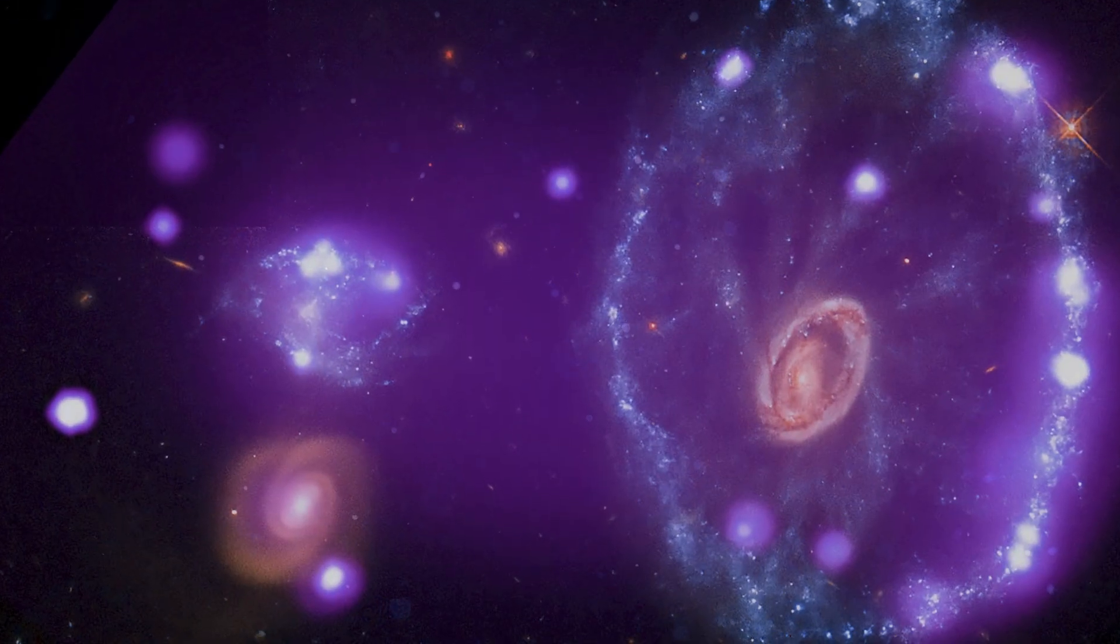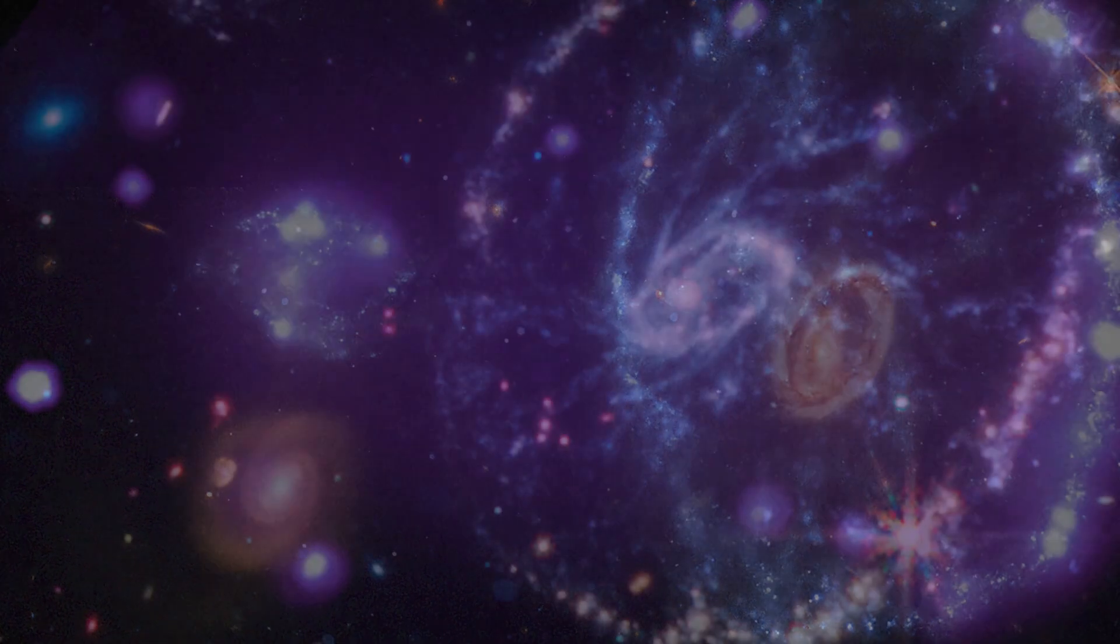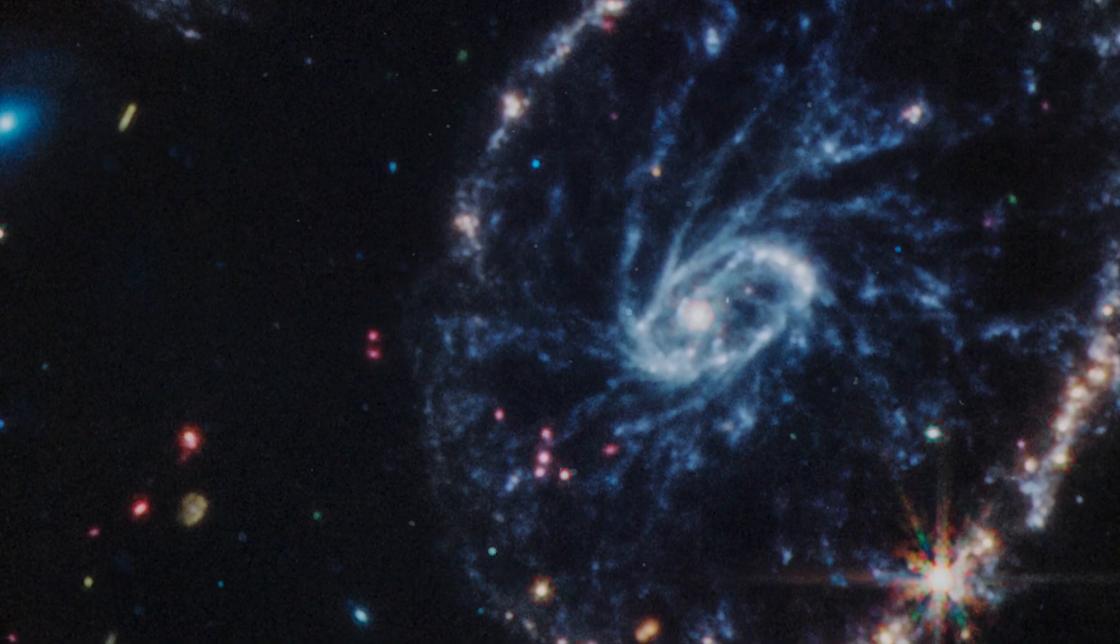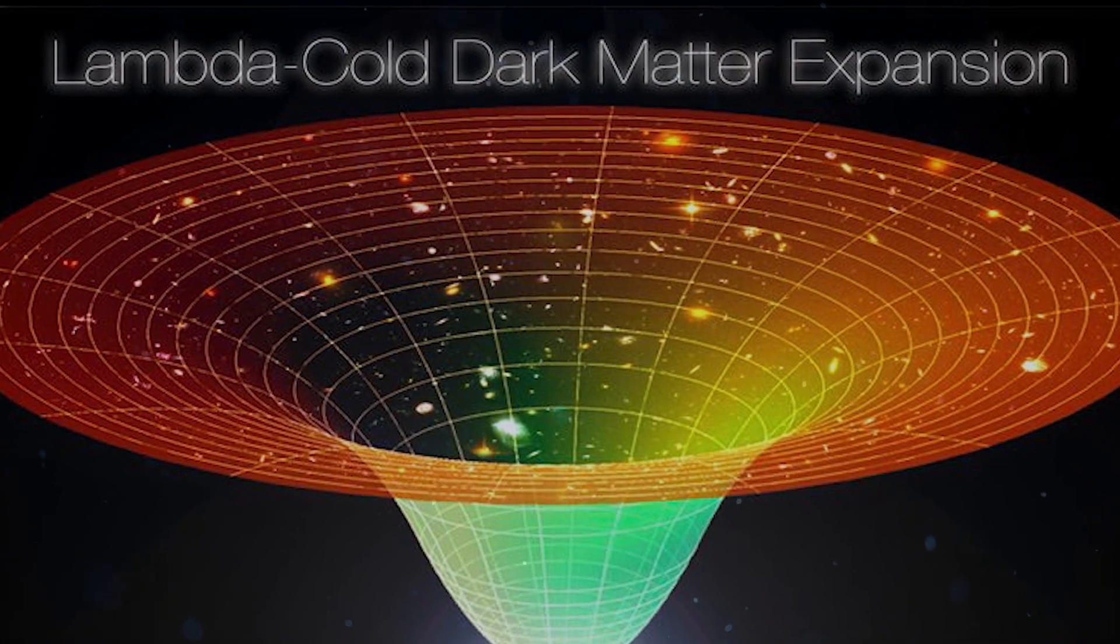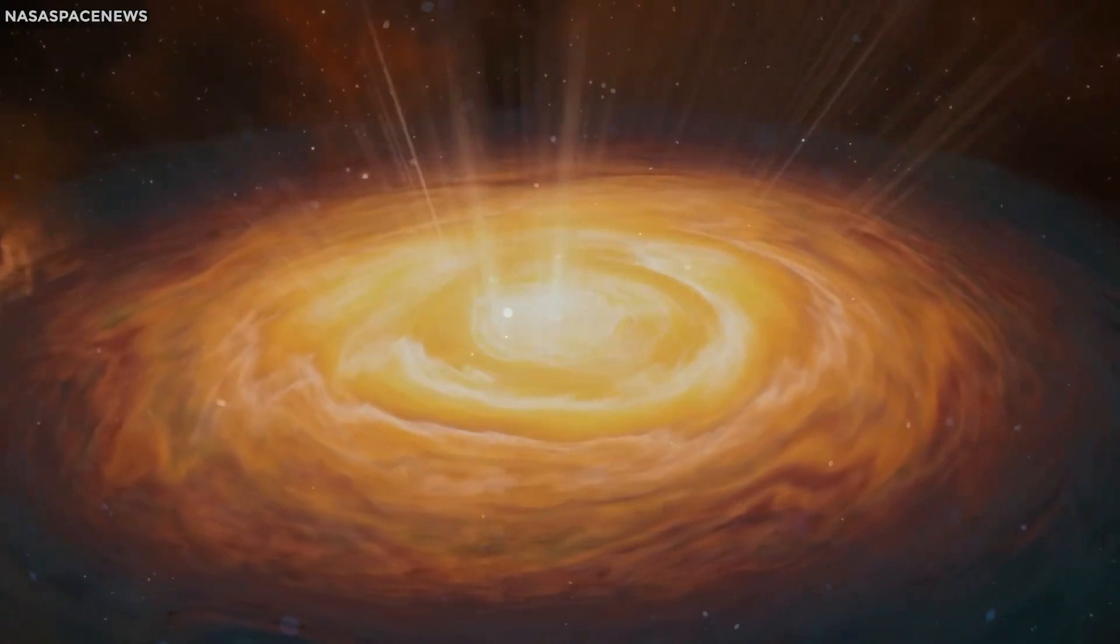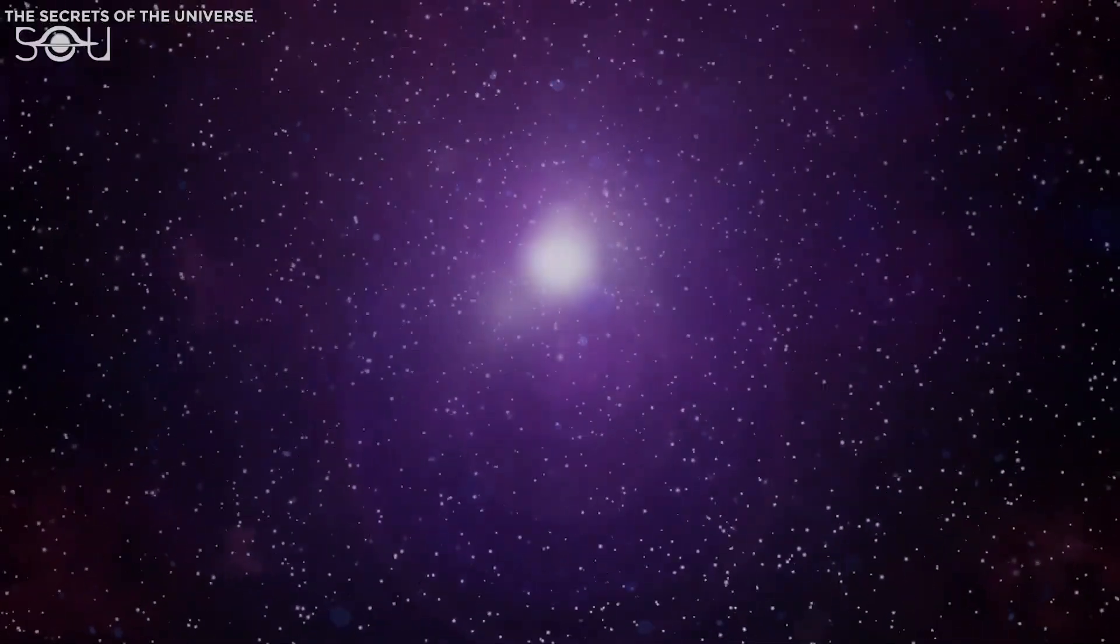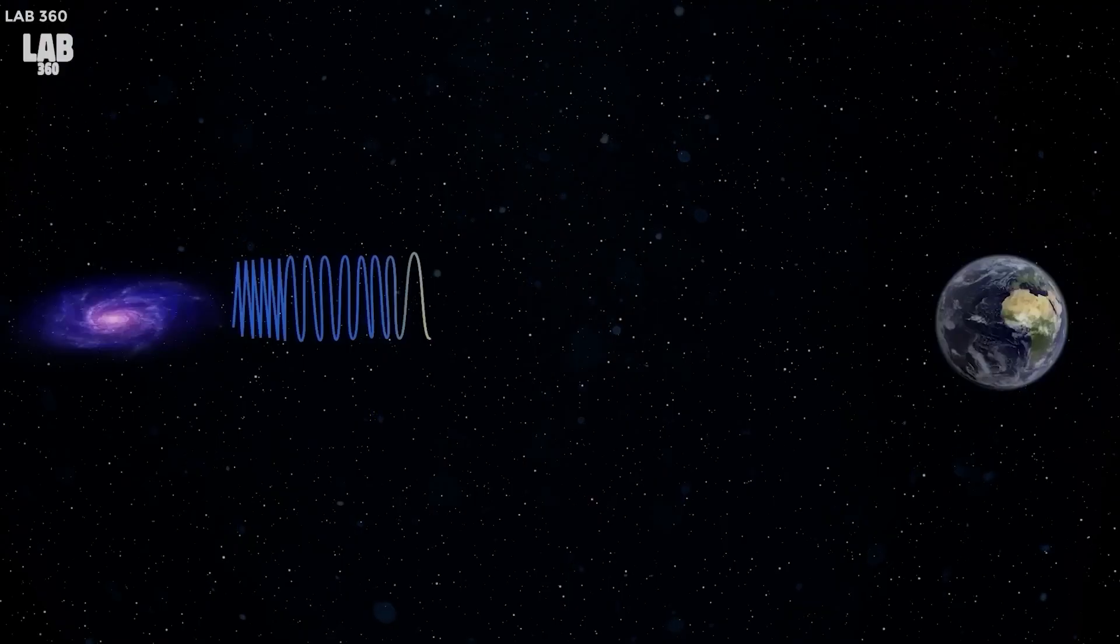However, these galaxies were significantly smaller in mass, around 10^8 and 10^9 solar masses. Now, the question remains, can the ΛCDM model account for the existence of these smaller galaxies at such an early stage in the universe's history? Or does the tension persist?